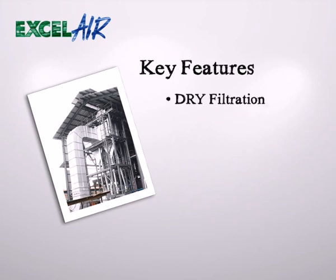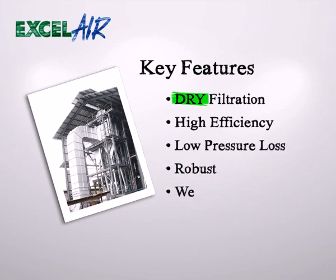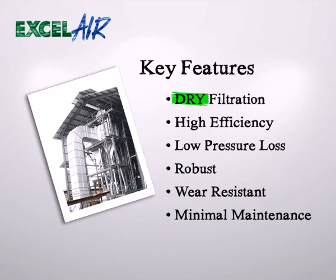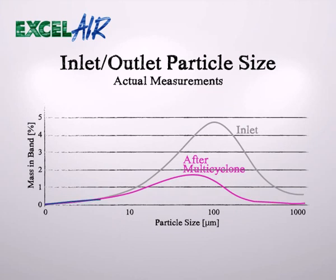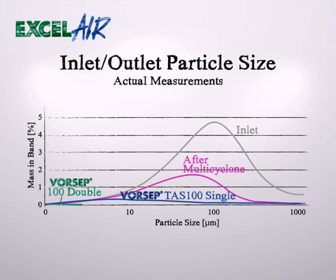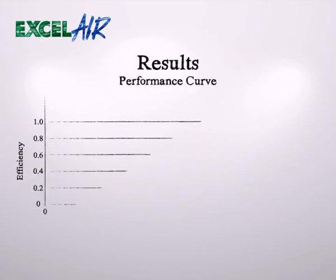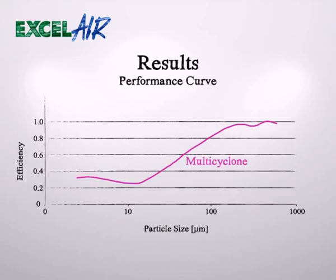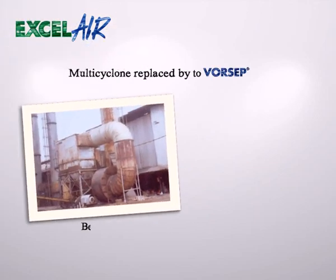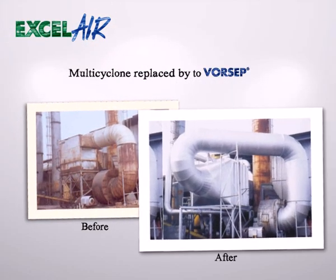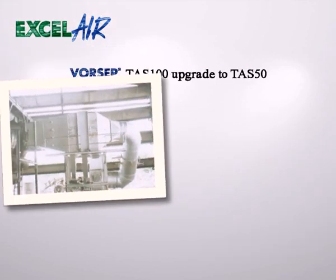Key features include: dry filtration, high efficiency, low pressure loss, robust construction, wear resistance, and minimal maintenance. Looking at the particle sizes again, the VORCEP not only reduces the particle sizes, but also collects particle sizes over the whole spectrum. Consider the vast difference between the VORCEP reduction over a comparison multi-cyclone reduction. The efficiency curve of the VORCEP compared to typical multi-cyclones puts the efficiency of the VORCEP system into perspective. Because it is compact, the VORCEP system can be retrofitted into boiler installations by removing the existing multi-cyclone.